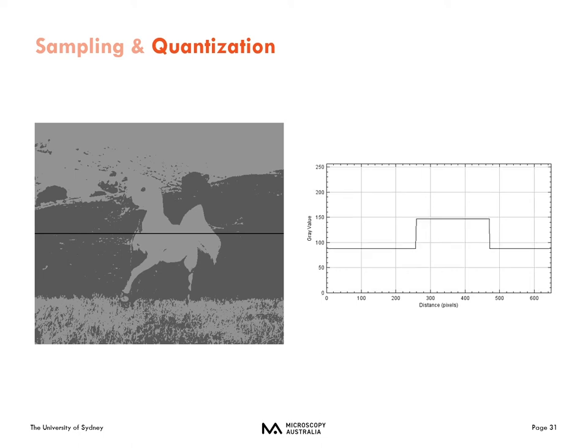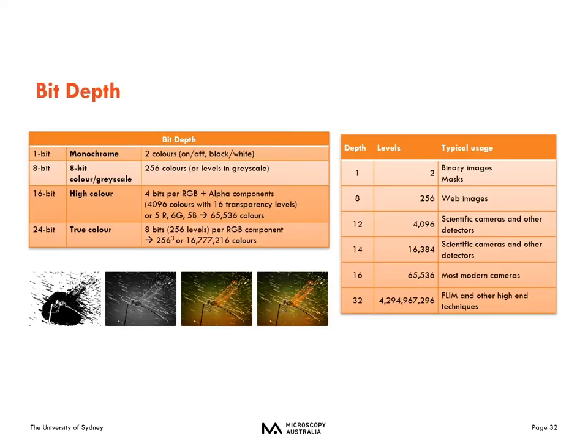Bit depth depends on your microscope and the type of detector you are using. Some systems at the University of Sydney have 8-bit or even 16-bit cameras or detectors. We have advanced imaging techniques like FLIM which can use up to 32-bit data. Shown at the bottom of the screen is a dragonfly in the rain — you can see how the image looks different between 1-bit on the left, to 8-bit grayscale, to 16-bit color, and 24-bit color.